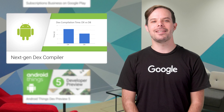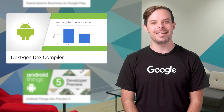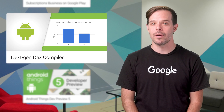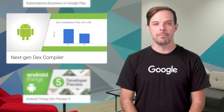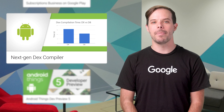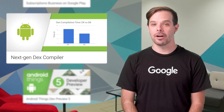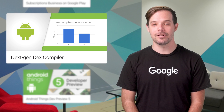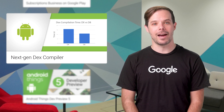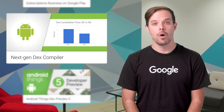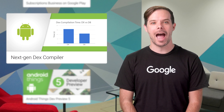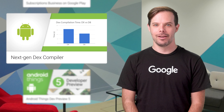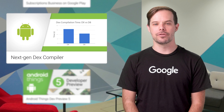The next generation DEX compiler D8 is now available for preview as part of the Android Studio 3.0 beta release. Compared to the current DX compiler, D8 compiles faster and outputs smaller DEX files while having the same or better app runtime performance. Try it out with the instructions on the post.